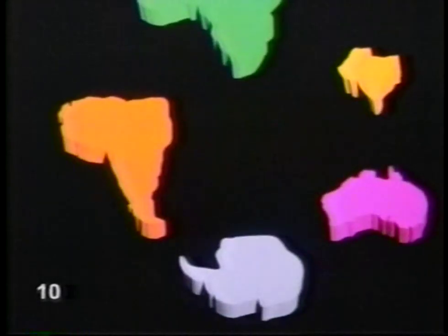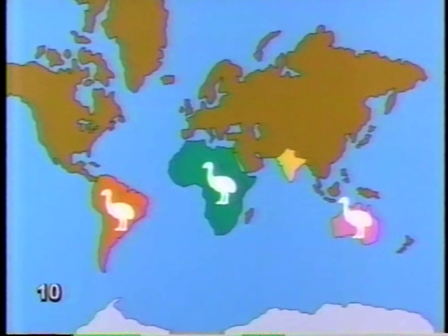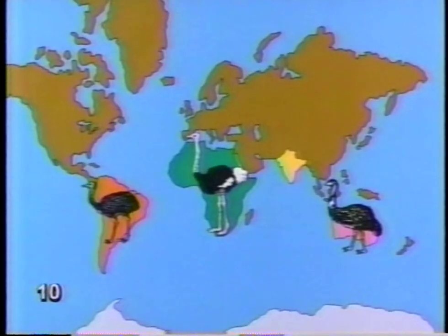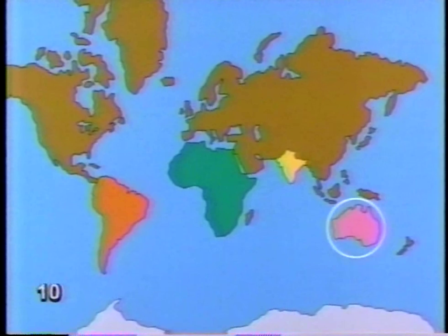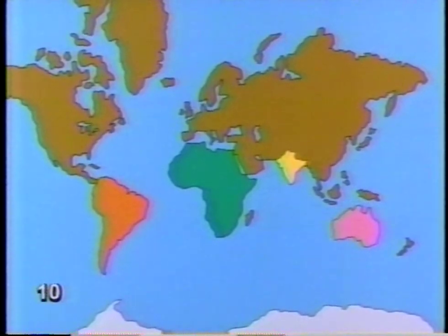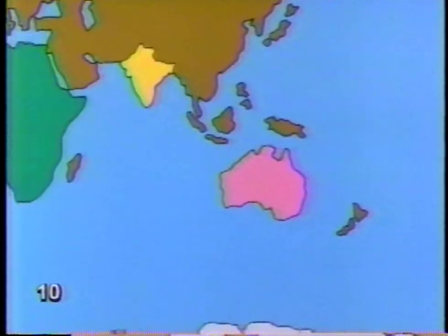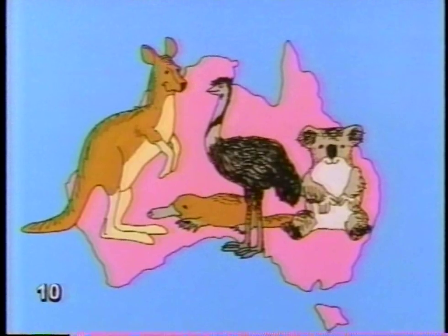A giant flightless bird once roamed Gondwana Land. As the continents drifted to different locations, animals all over the world were adapting to their new environments. This giant bird evolved into the three large birds that live on different continents today: the emu of Australia, the rhea of South America, and the ostrich of Africa. Even after the big split, all the continents except Australia remained connected to each other for a time, so animals everywhere but Australia were free to move from continent to continent. Meanwhile, Australian animals, isolated from the rest of the world, evolved in their own special ways.